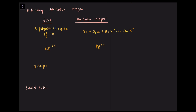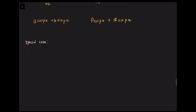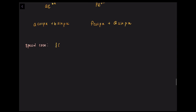The second type is ae^(bx), and the particular integral is pe^(bx). The third type is a·cos(px) + b·sin(px), and we change it into p·cos(px) + q·sin(px). We are going to solve for a₀, a₁, a₂ in the first case; p in the second case; and p and q in the third case.